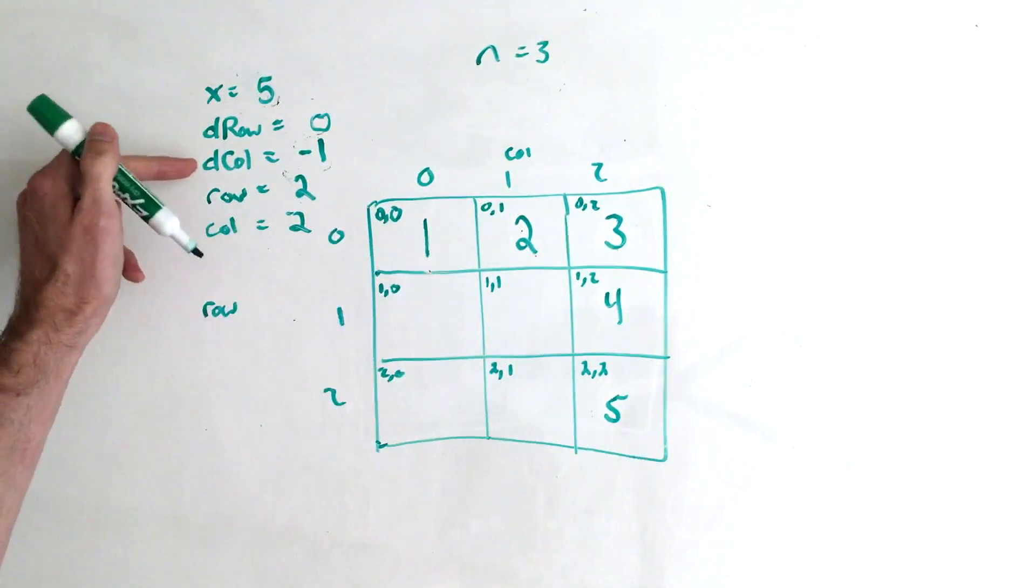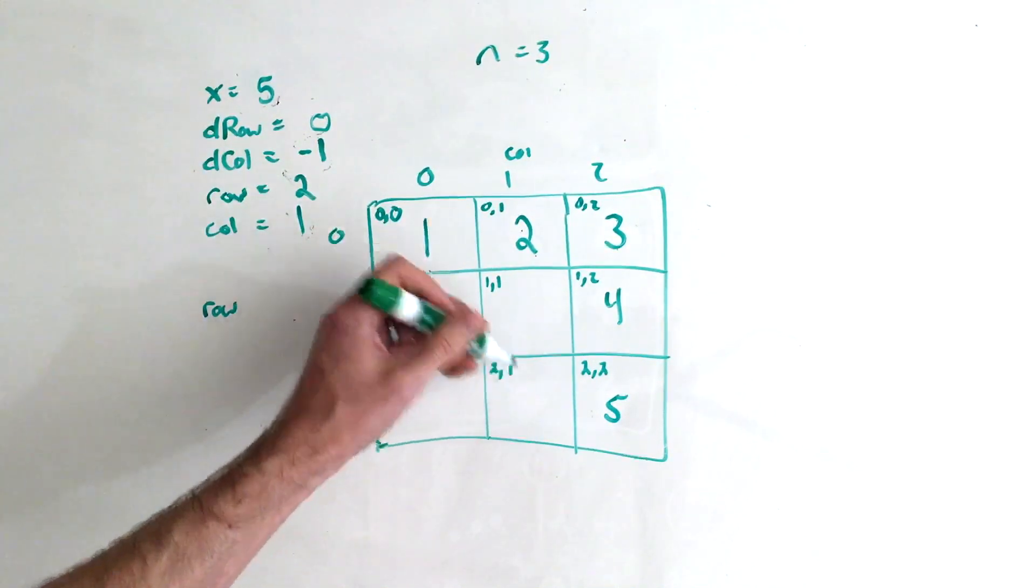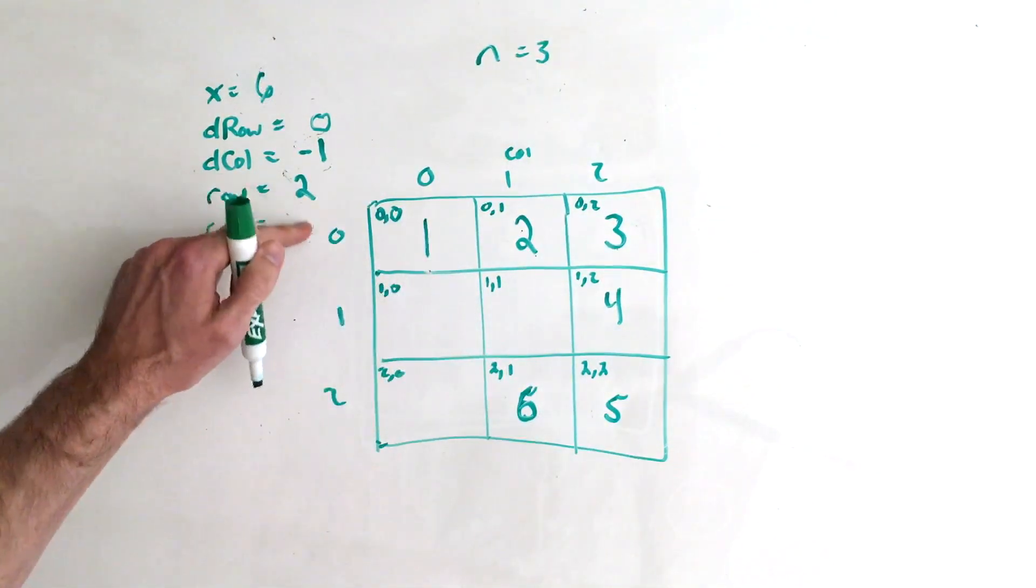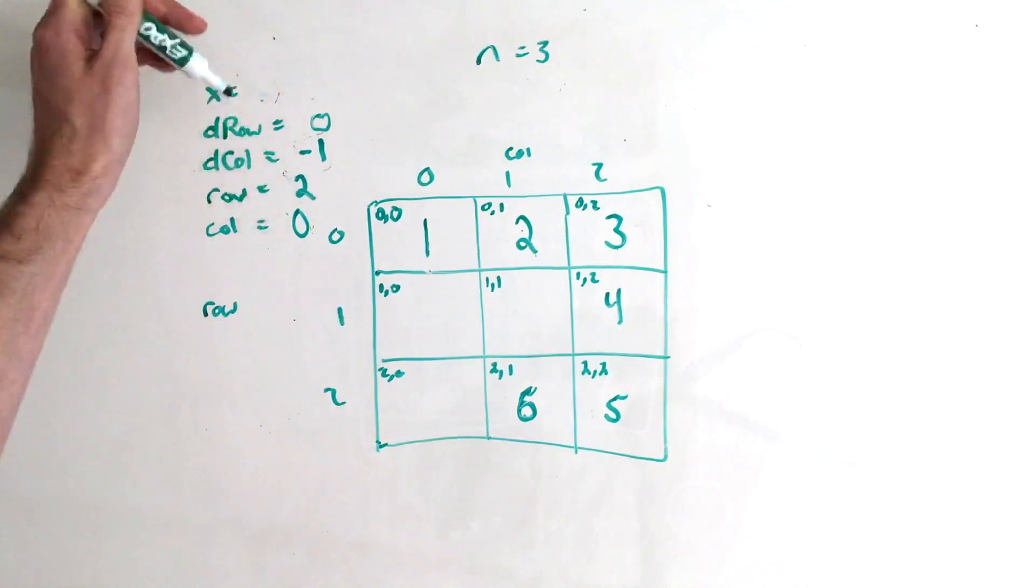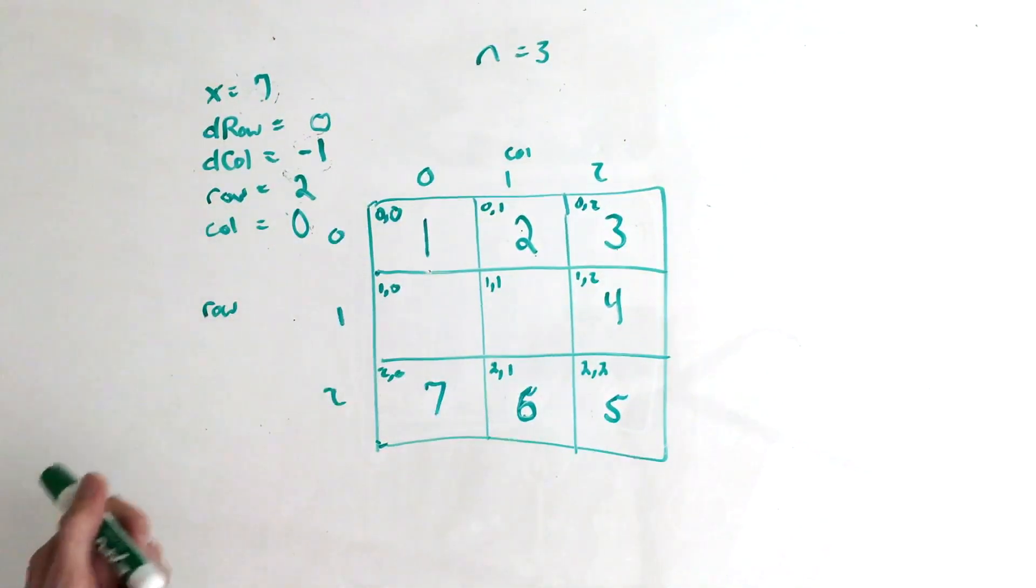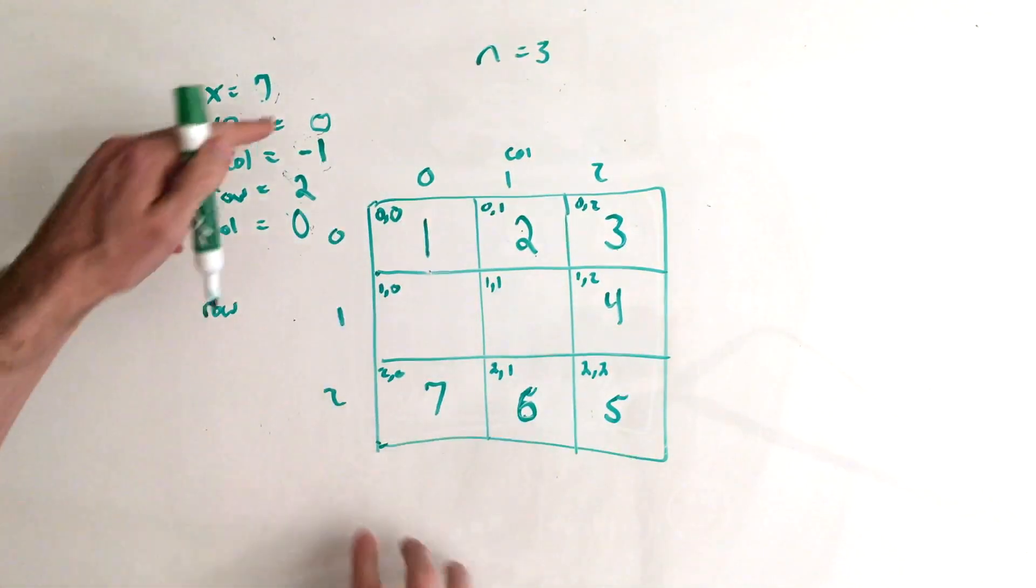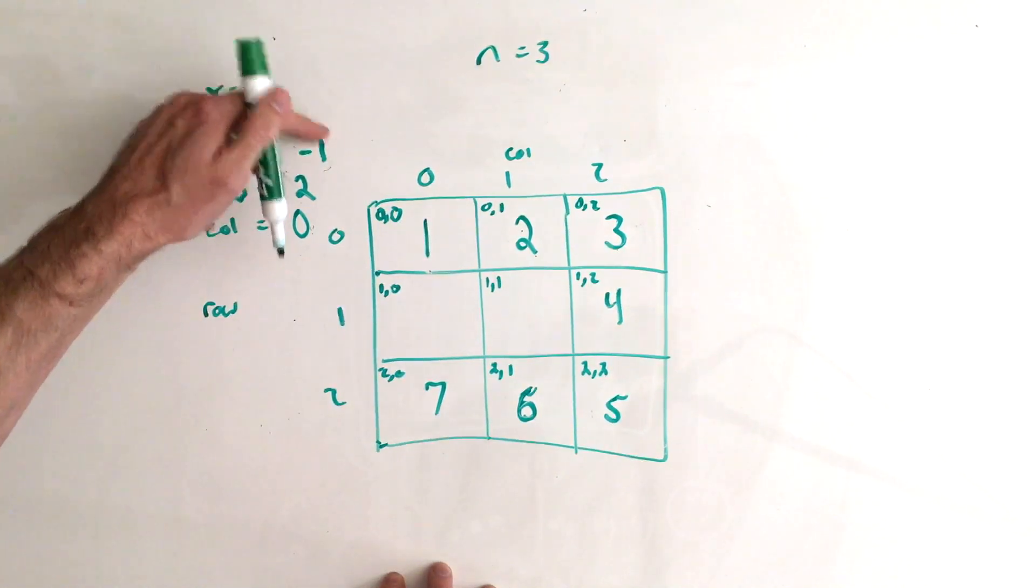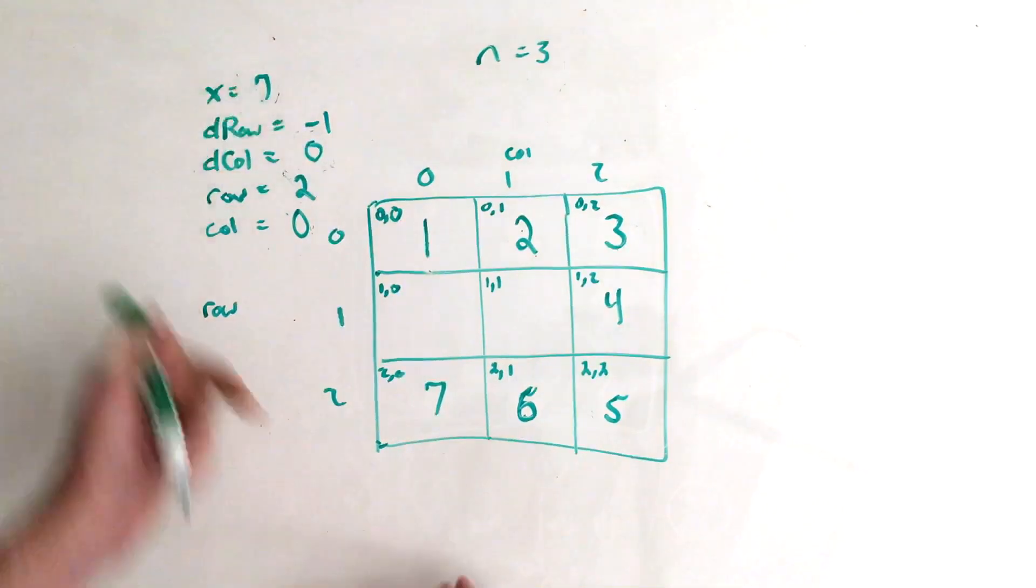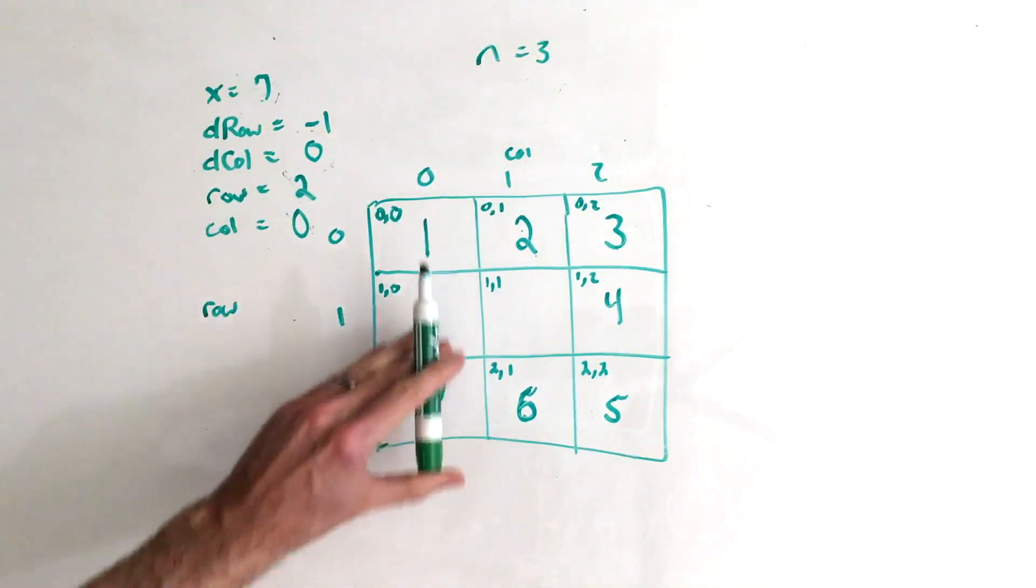So then in this case, when we add dcolumn to column, this will become 1, which puts us at 6, same process, this becomes 0, this becomes 7. And again, if we were to move in the negative d direction, we go out of bounds, so we need to swap these again. So 0 becomes negative 1, negative 1 will become 0, which if you look at this, that means that we're going to be going up again.